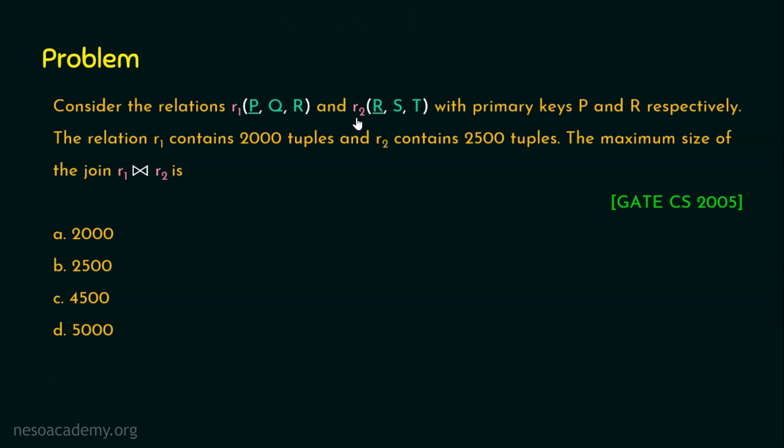Since we are considering this as the natural join, we know natural join joins two or more relations based on the common attribute, and here this R is the common attribute. Since R is the primary key attribute in R2, when we take the value of the common attribute R, in this case R2, I mean relation 2's R is the common attribute and this should match. Whether we have duplicate values or null values in R1, we don't worry about it, because this R2 should match with R1. So there are 2500 tuples that can match with 2000 tuples here. So the output is going to be obviously 2000 only.